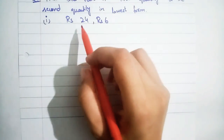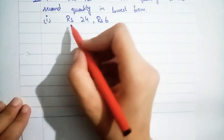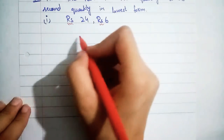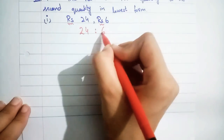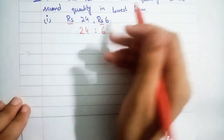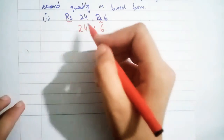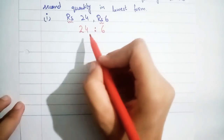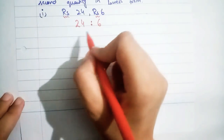First part: Rupees 24 to Rupees 6. The units are the same — rupees and rupees — so we can cancel the units. We write 24 : 6, then we see which common factor divides both. We can use the 6 times table or 2 times table to cancel.